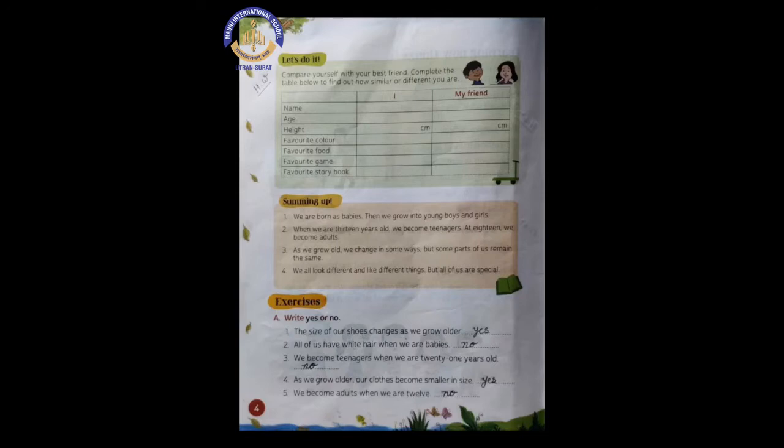Now number 3, we become teenagers when we are 21 years old. Yes or no? You remember, I told in last lecture that you have to remember at which age we become teenagers and at which age we become adults. So let me revise you. In the question, we become teenagers when we are 21 years old. But that is wrong. We become teenagers at the age of 13. So the answer is no.